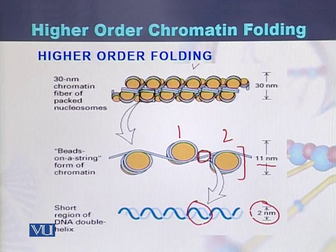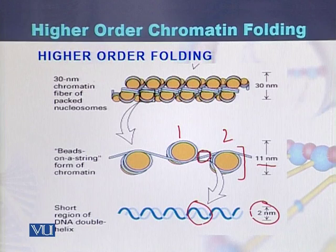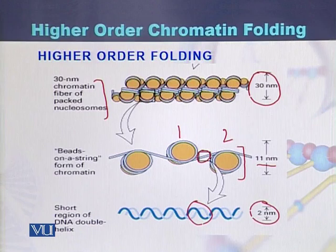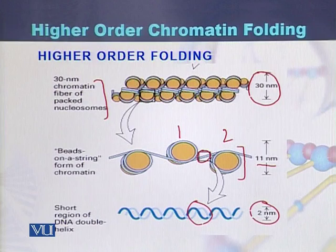These nucleosomes, after packing or joining with each other, form the chromatin fiber. That chromatin fiber is 30 nanometers in diameter. So the diameter of DNA is 2 nanometers, after the formation of nucleosomes its diameter becomes 11 nanometers, and after joining of nucleosomes with each other the diameter becomes 30 nanometers.